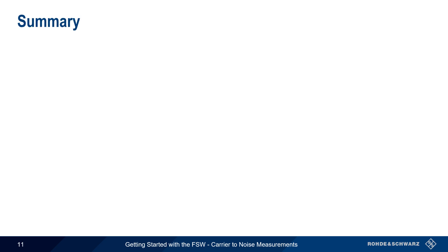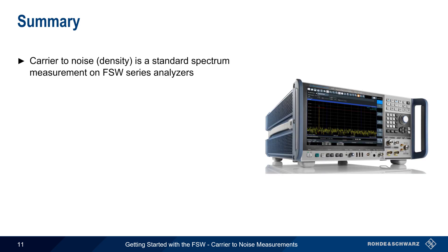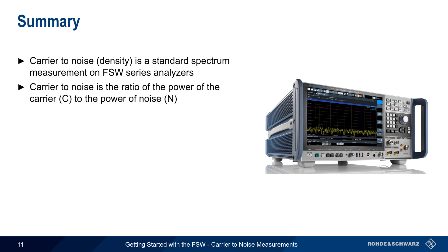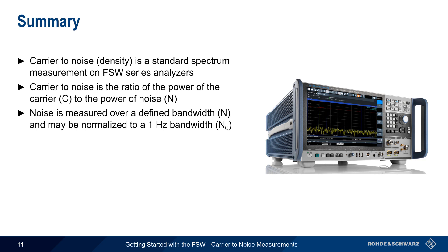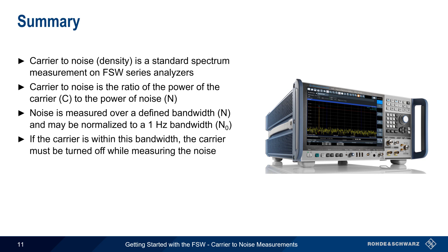Let's end with a brief summary. Carrier-to-Noise measurements are standard features on Rohde & Schwarz's FSW Series signal and spectrum analyzers. Carrier-to-Noise is the ratio of the power in the carrier, C, to the power of the noise, N. Noise is measured over a defined channel bandwidth, and may also be normalized to a 1 Hz bandwidth, in which case it is referred to as Noise Density, or N0. It's important to remember that if the carrier is within the channel bandwidth, it must be turned off during the noise measurement. This is sometimes called the 2-sweep method, since one sweep is used to measure the carrier power, and then a second sweep is used to measure the noise with the carrier turned off.